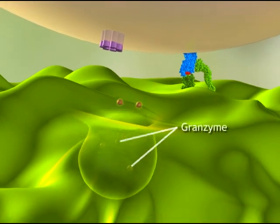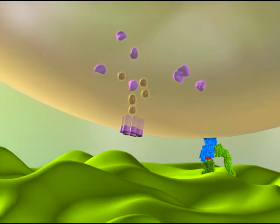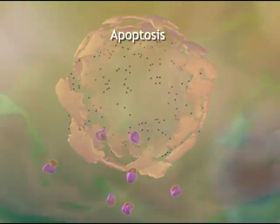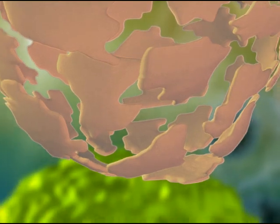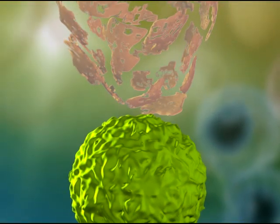Granzyme, also from the T cell, passes through the perforin channels and activates enzymes that lead to apoptosis, the programmed death of the infected cell. The cytotoxic T cell then moves on to look for another infected cell.